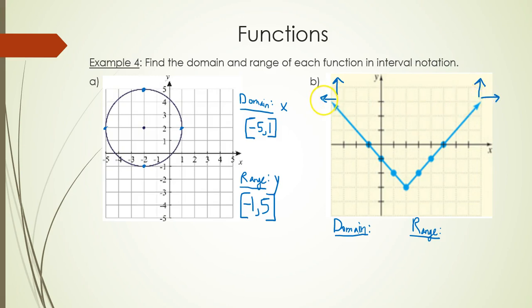So the furthest left you go, well since there's an arrow going left, it's negative infinity. The furthest right you go, since there's an arrow going right, it's positive infinity. And you always put parentheses around infinities.